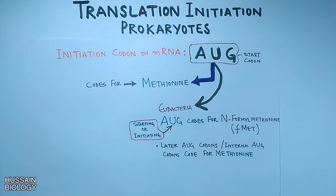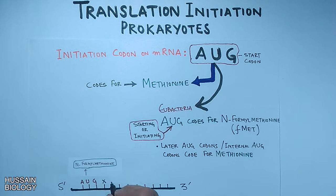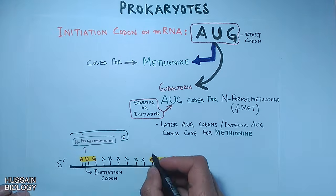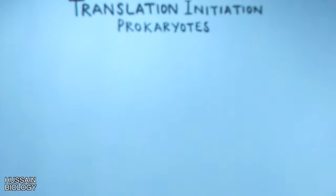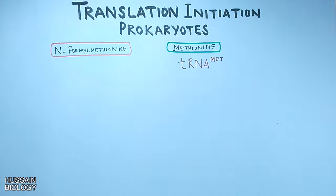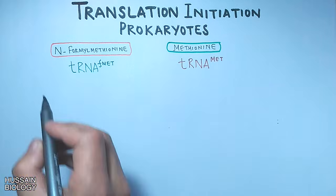Later on, internal AUG codons code for methionine as usual. In this diagram we have the initiation codon AUG, from where translation starts, coding for N-formyl methionine. On the right is another AUG — the internal codon — which codes for regular methionine. So we have two different aminoacyl-tRNAs: tRNA-fMet for N-formyl methionine and tRNA-Met for methionine.